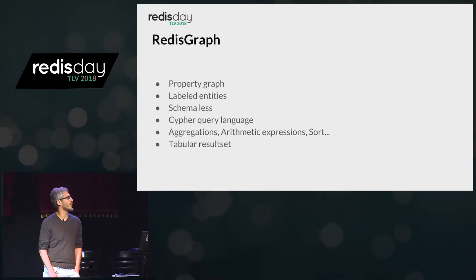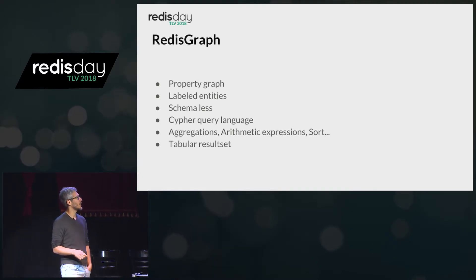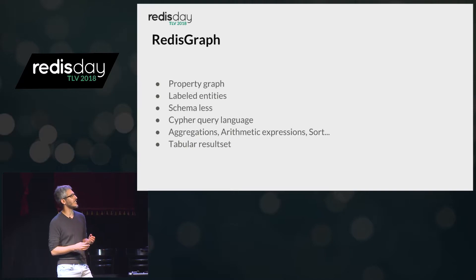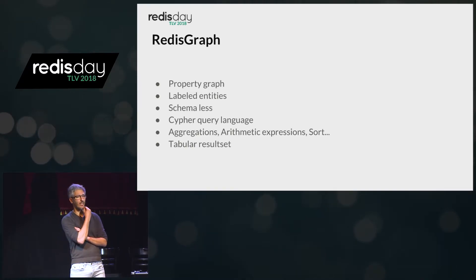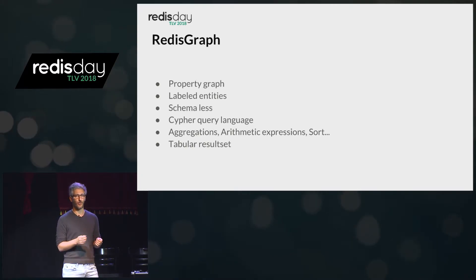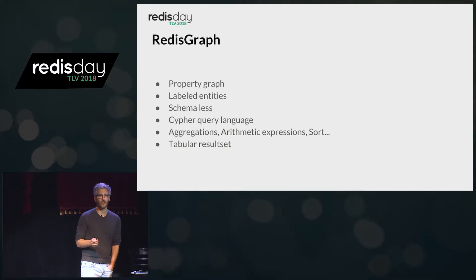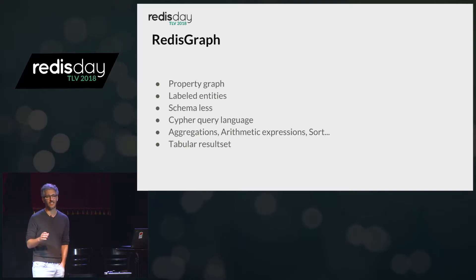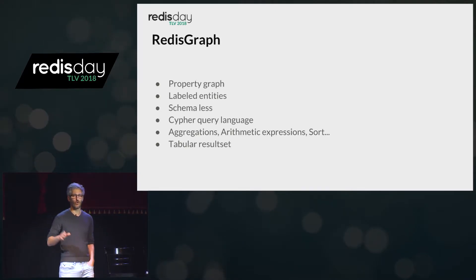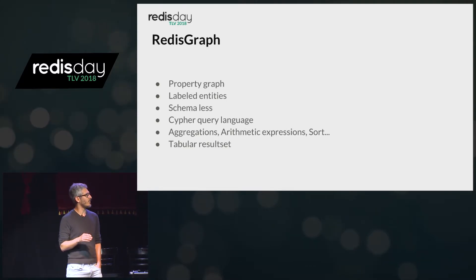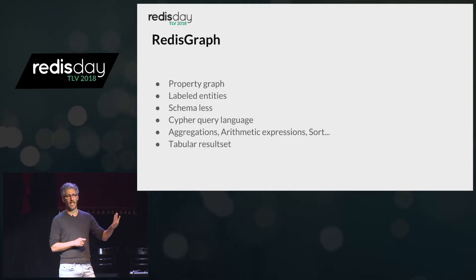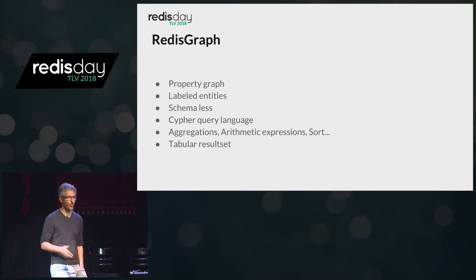Redis Graph is a graph database developed at Redis Labs and follows the property graph model, meaning entities within the graph can have properties. A node can have attributes like name or age. Similarly, edges can also have attributes. We can label nodes — for instance, a node of type person or type country — without enforcing a schema. Two nodes of the same type can have a different set of attributes.